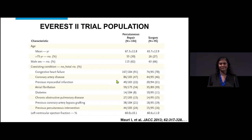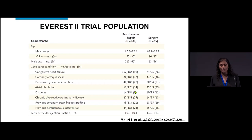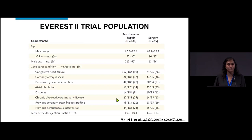Looking at the EVEREST II population, the mean age was mid-60s, about 30% were over 75, mostly men. They didn't have many comorbidities other than heart failure — about 25% averaged overall, only 8% had diabetes, not much COPD, and their EFs were around 60%. This was a very specific population. Once MitraClip came out, cardiologists wanted to do it, prompting a look at real-life experience beyond the trial.